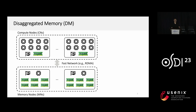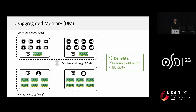Disaggregating memory is an increasingly popular architecture in academia and industry. It physically separates the computing and memory resources into two pools and interconnects them with faster networks, such as the RDMA network. In the DM architecture, each compute node owns many CPU cores but only has a small amount of memory, while each memory node has abundant memory but only owns a few CPU cores. Since CPU and memory resources are no longer coupled together, resources on DM can be allocated arbitrarily, providing better resource utilization and elasticity.